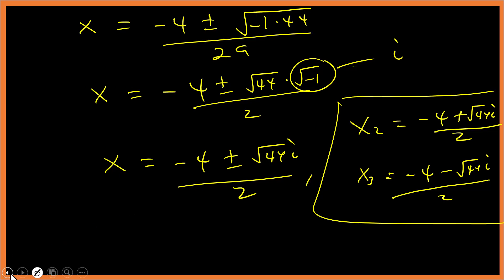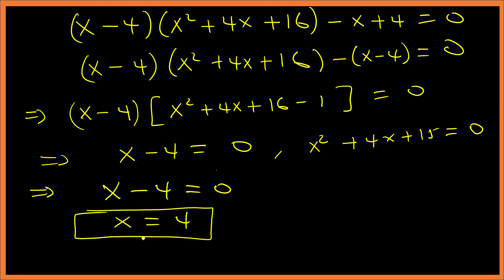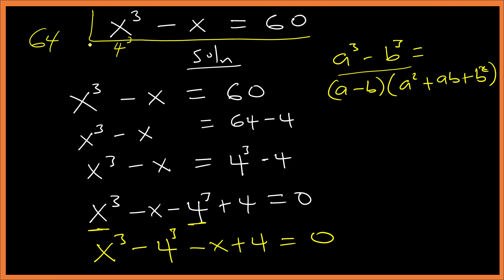These two solutions are complex numbers. To verify the real solution x equals 4: substituting into x cubed minus x gives 4 cubed minus 4 equals 64 minus 4 equals 60. That is correct.